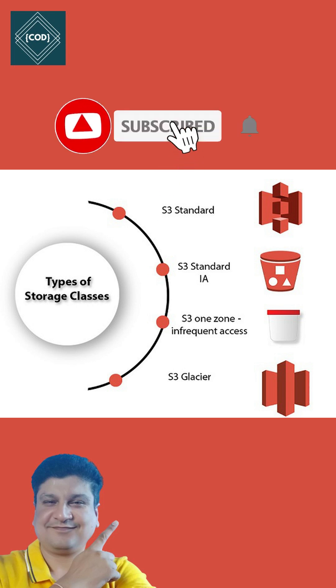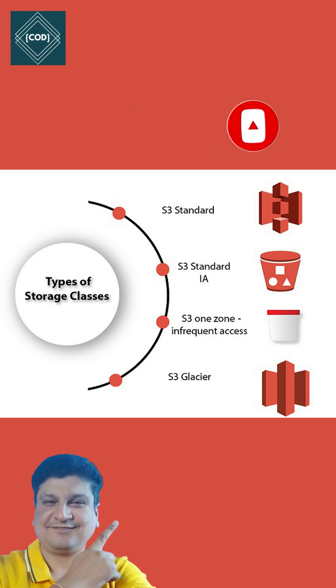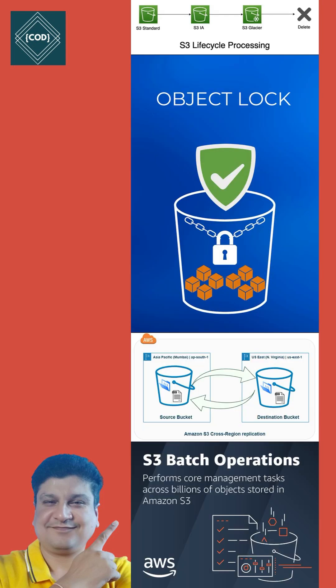For example, you can store mission-critical production data in S3 Standard for frequent access, or store infrequently accessed data in S3 Standard-IA to save cost. Second feature: storage management. Amazon S3 has a strong storage management feature.